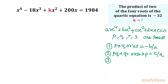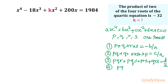The third formula, products of roots taken three at a time: pqr plus pqs plus prs plus qrs equals minus d over a — note the minus sign. And the last formula is the product of all roots: pqrs equals e over a. This is the general formula using Vieta's theorem.